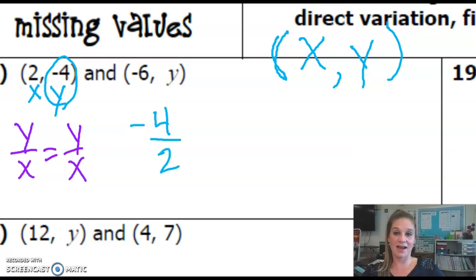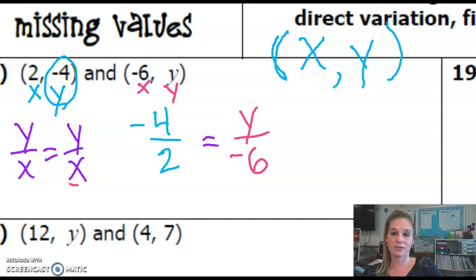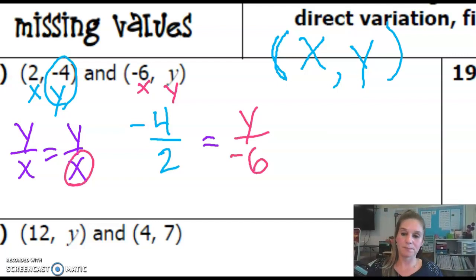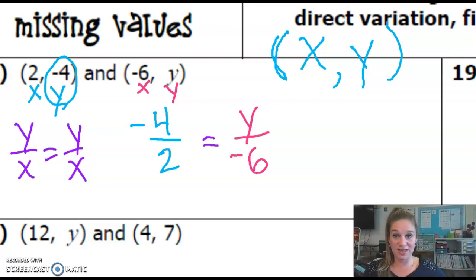And then we're going to set that equal to our other coordinates. So remember that this is also an X and a Y. They're giving us our Y, so we're going to leave Y up here. And then we're going to put a negative 6 in where we would have our X. So now we have a proportion that we've seen before and we could easily solve this.